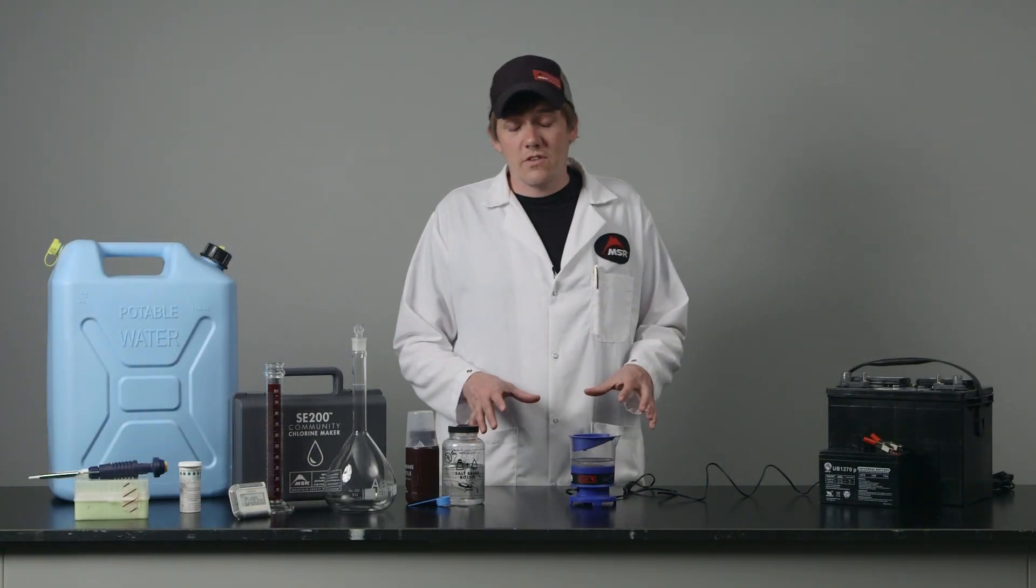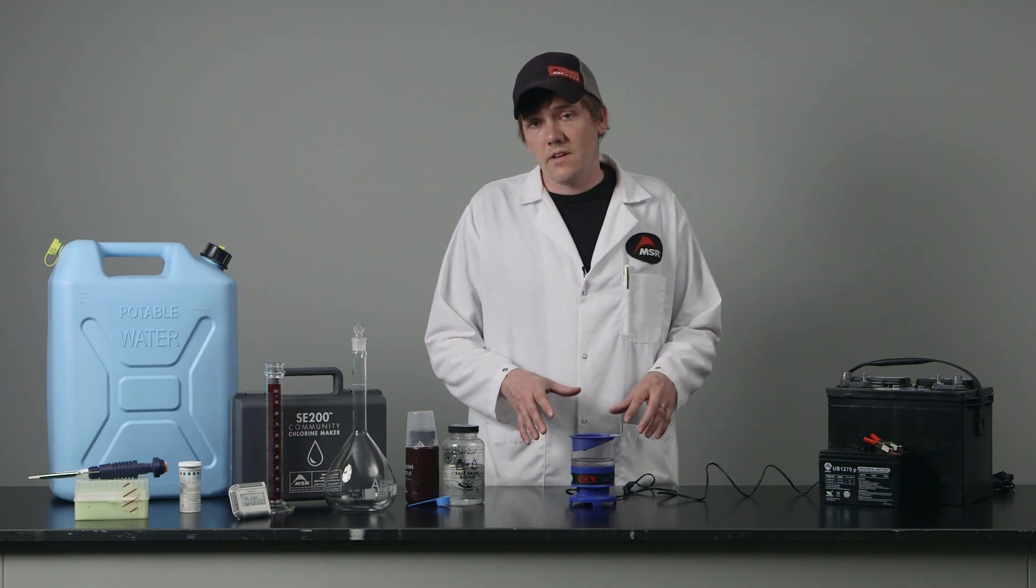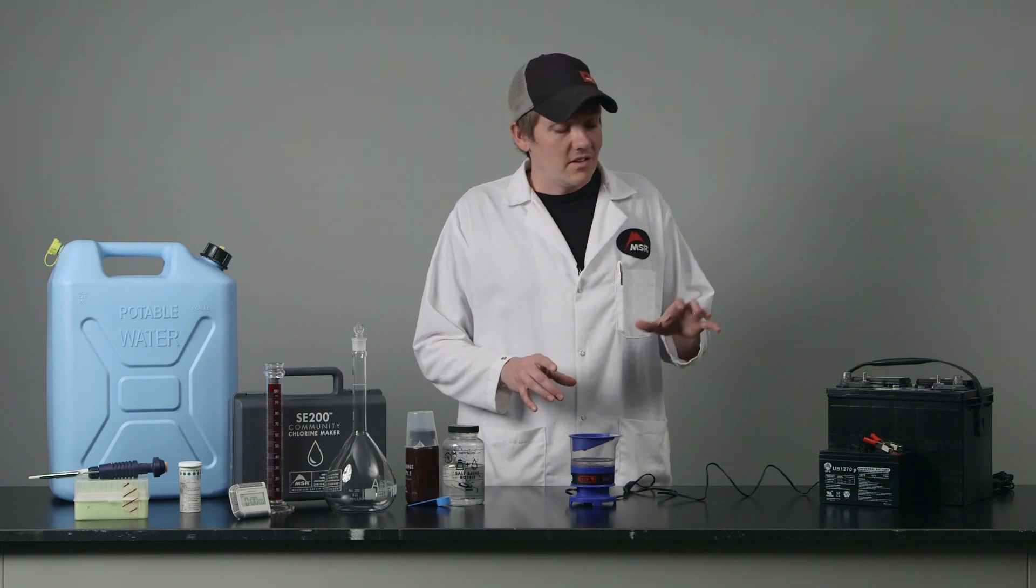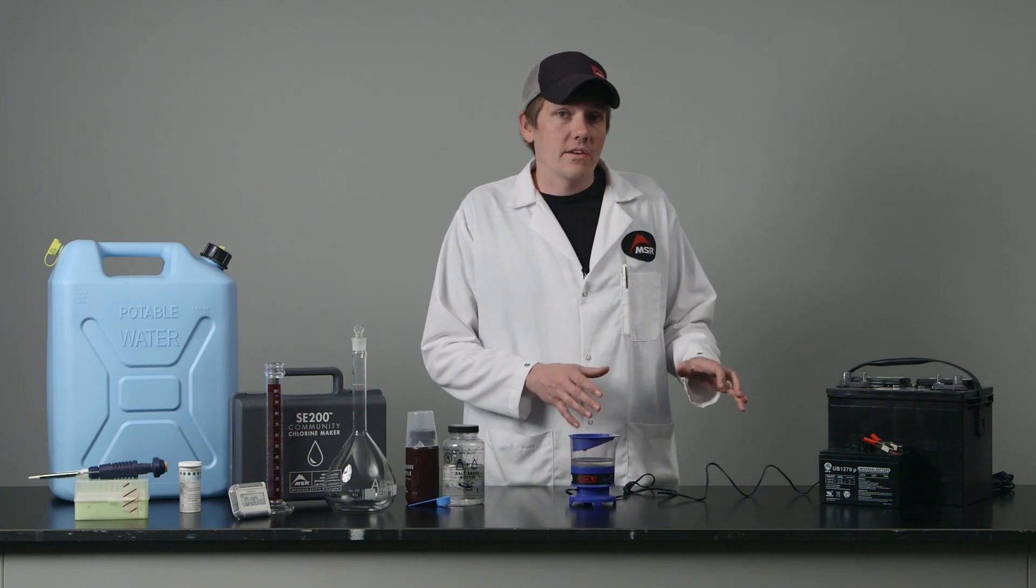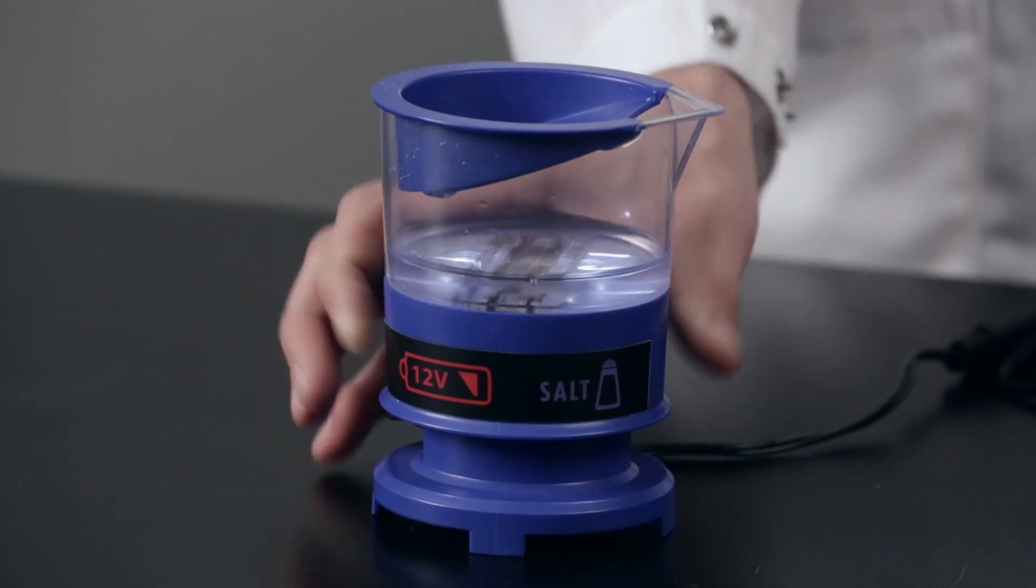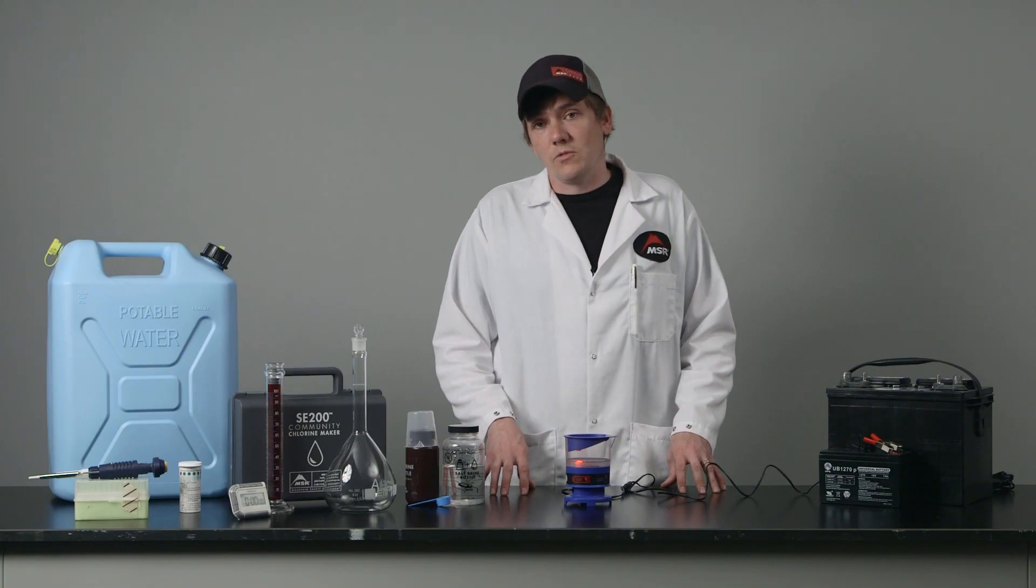The next thing I want to talk to you about is how to know what's going on when the device doesn't operate. There's two main reasons that it won't run. The first is insufficient power. What will happen is when you connect it to a battery that doesn't have enough power and you try to run it, you will get a red error light immediately. That's how you know that it's time to charge your battery.